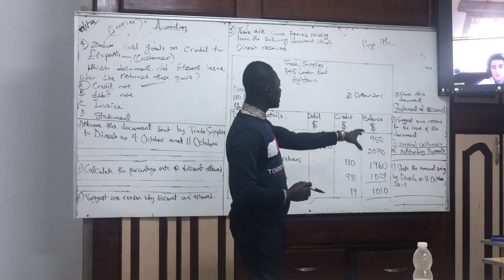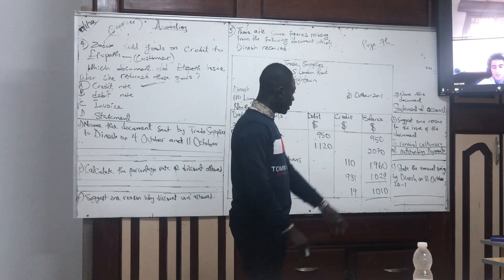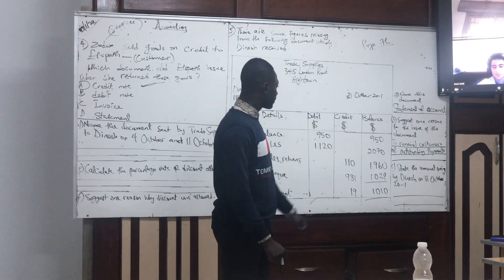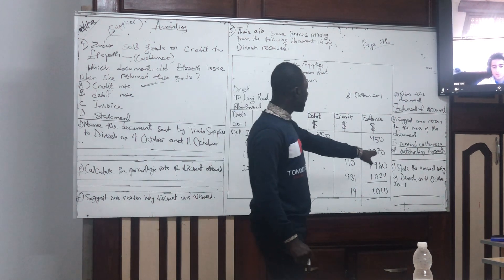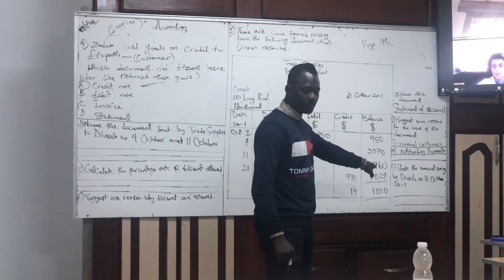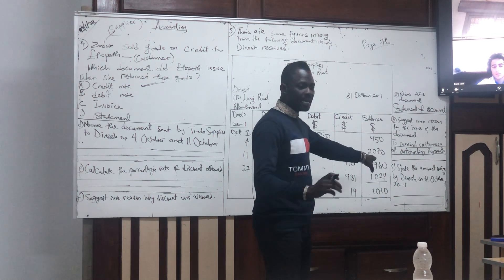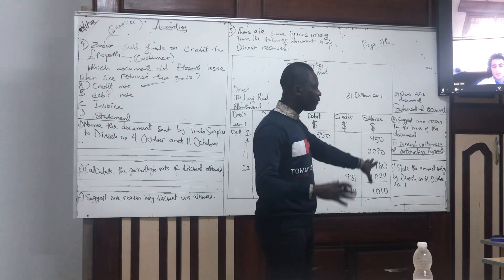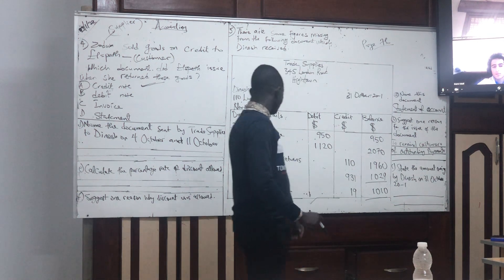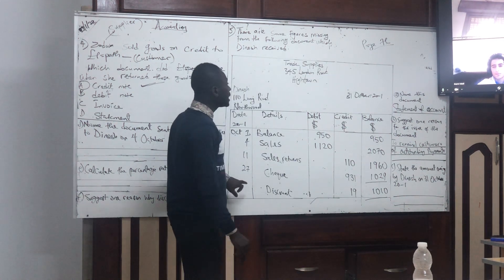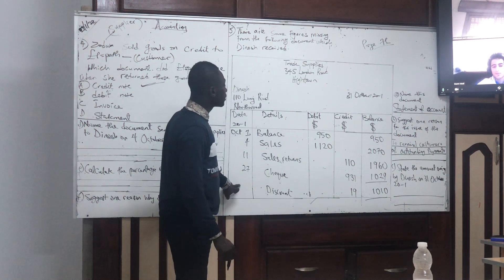So, to remind customers of outstanding payments — this is question C. State the amount owed by Damage on 31st of October. The amount due on 31st of October. So, this is the 27th.